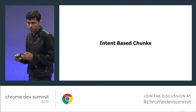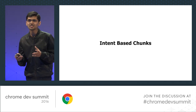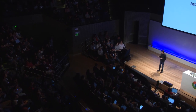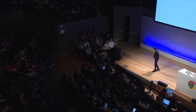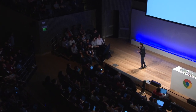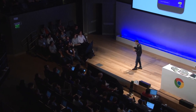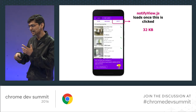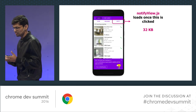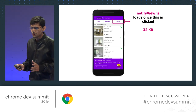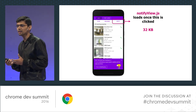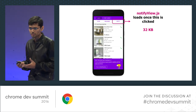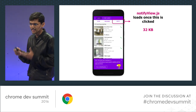The second category is intent-based chunks. These are chunks only required when the user does a particular interaction like scrolling or clicking that doesn't involve any route change. For example, on our listings page there's a notify button. Analytics data tells us it gets clicked once in a few sessions, and its corresponding view is 32 KB unzipped. So it makes no sense to load it with the main JS bundle — we require it only when the user clicks that button.